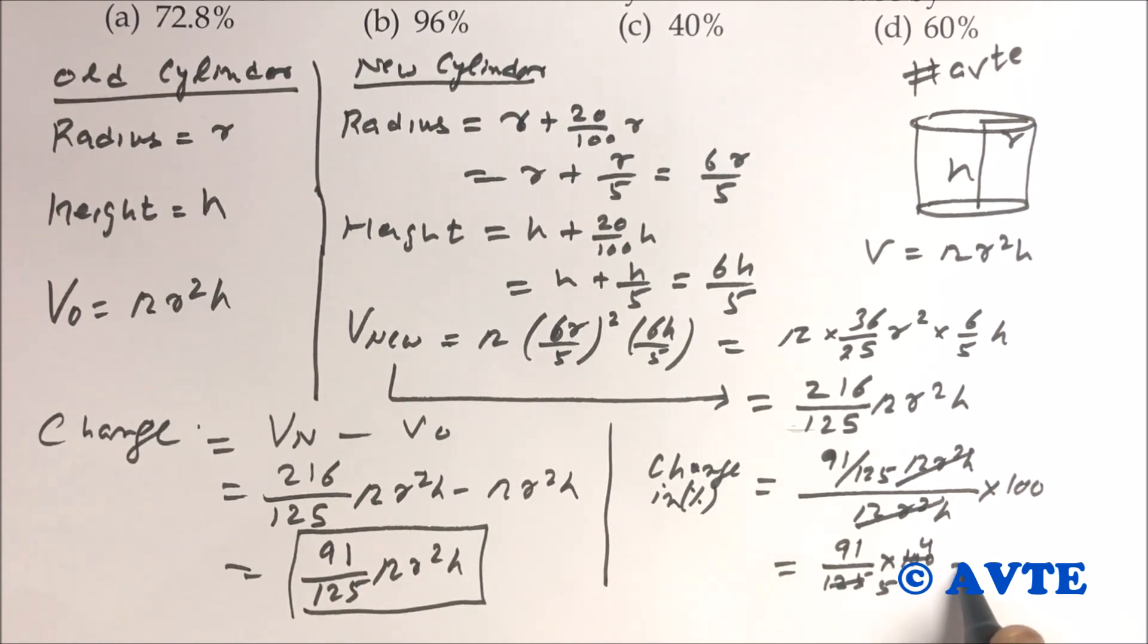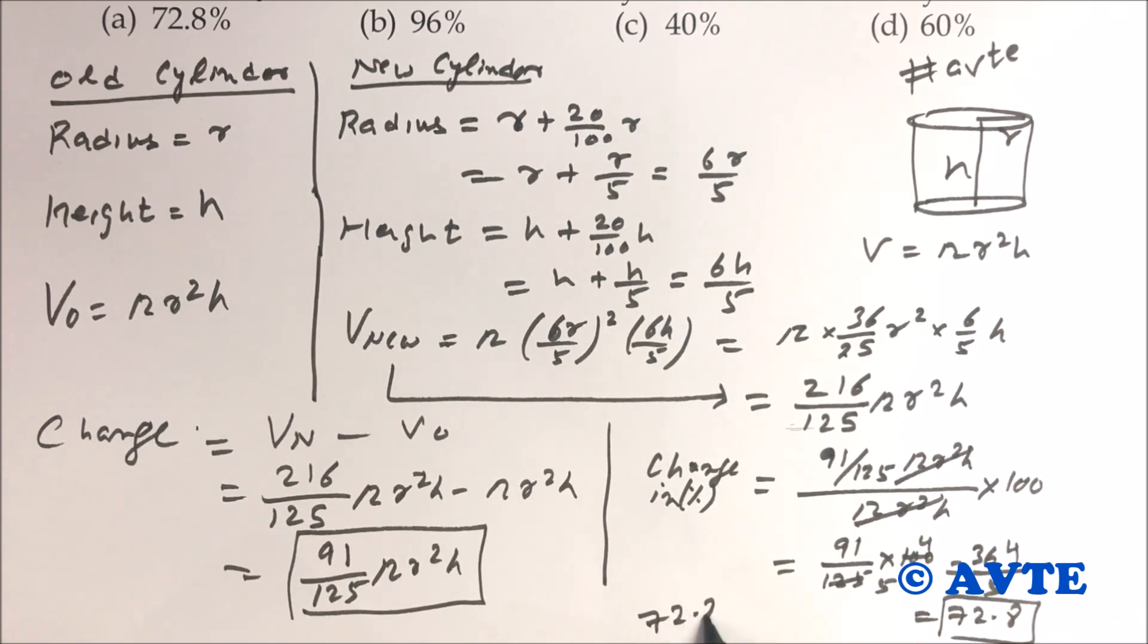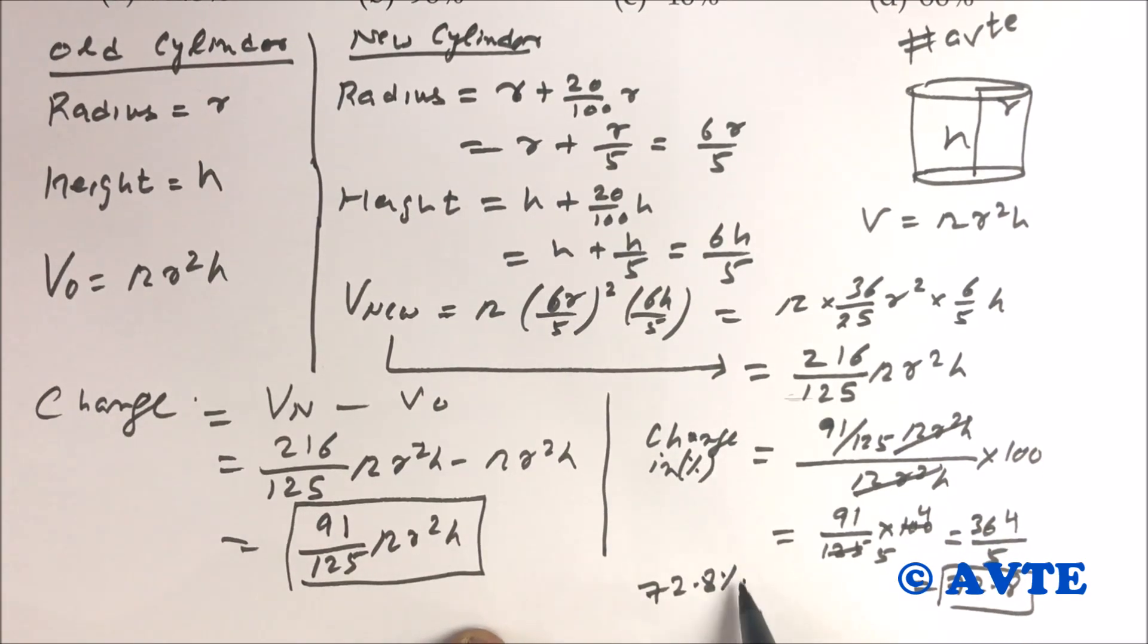This will cancel. This is 91 by 125 into 100. If you cut by 4 and 5, if you multiply 36 by 5, that is 72.8. So guys, answer is 72.8 percent.